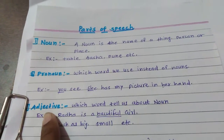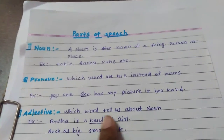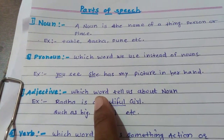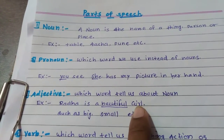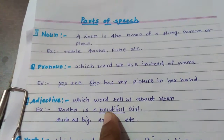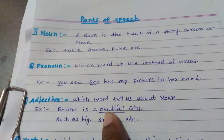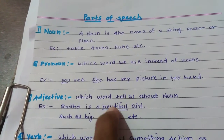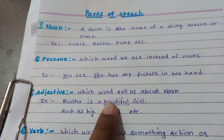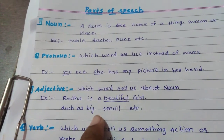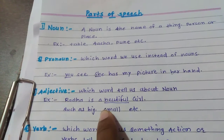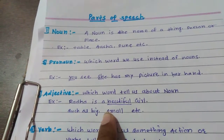Third is adjective. Adjective means the word that tells us about the noun, or in simple terms, the word that gives us more information about the noun is called as the adjective. For example: 'Radha is a beautiful girl.' Radha is a girl, but how is she? She is beautiful. So 'beautiful' is the adjective, because it gives more information about Radha. Many words like big, small, etc. can be used to show more information about the noun.